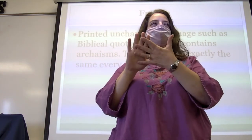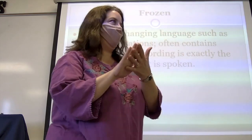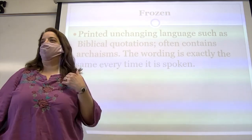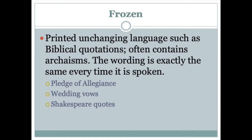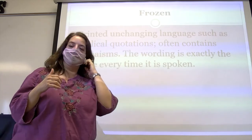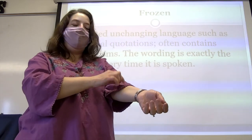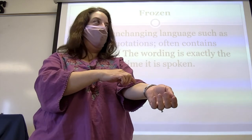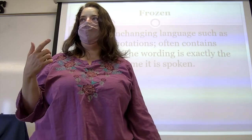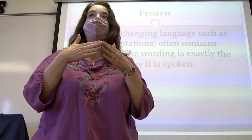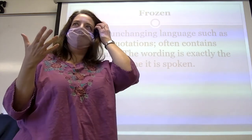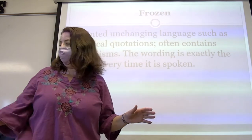There are five major language registers — you could argue there are more, but we're going to talk about the five major ones today. The first one is frozen text. It's frozen because it never changes — it's stuck and doesn't go anywhere. Things like quotations from the Bible, or sayings like 'A stitch in time saves nine' — that's one of those aphorisms that doesn't change. The idea is: take care of a small problem and it won't become a big problem.